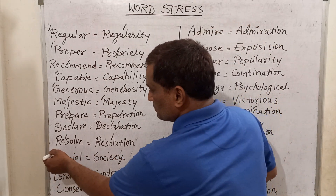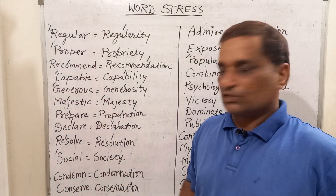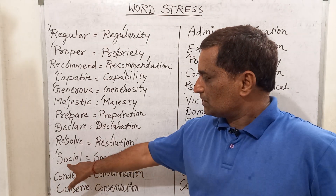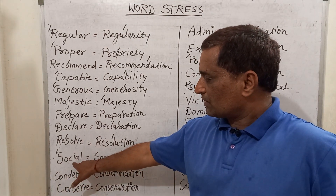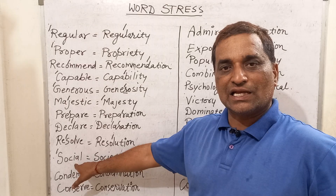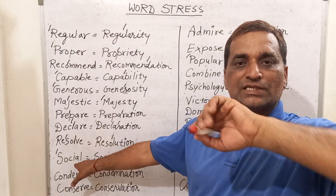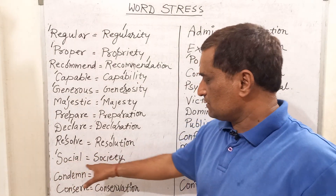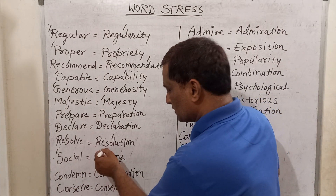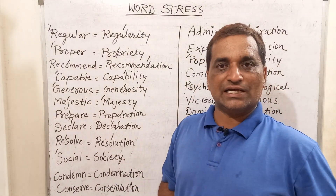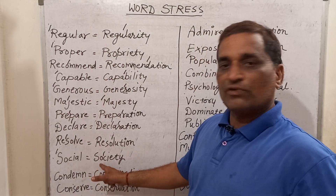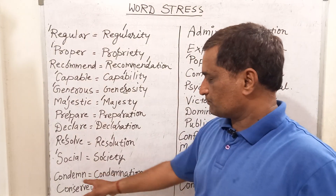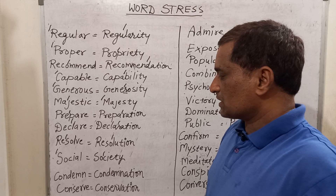Next is 'social' — the stress will come before S: 'social', not 'social' with an E sound. We Indians mispronounce these words; when we see I and A, we automatically start pronouncing E. That is not correct — it is 'social'. And for 'society', the pronunciation is 'society'. Here the O will not be pronounced; we will have to say 'sir' sound instead.